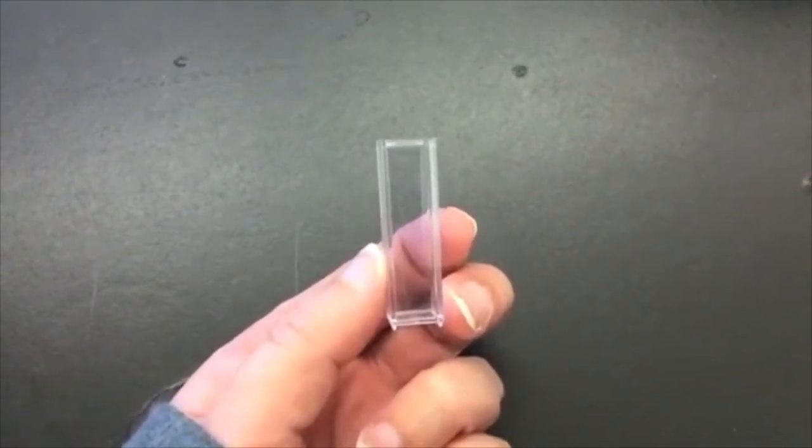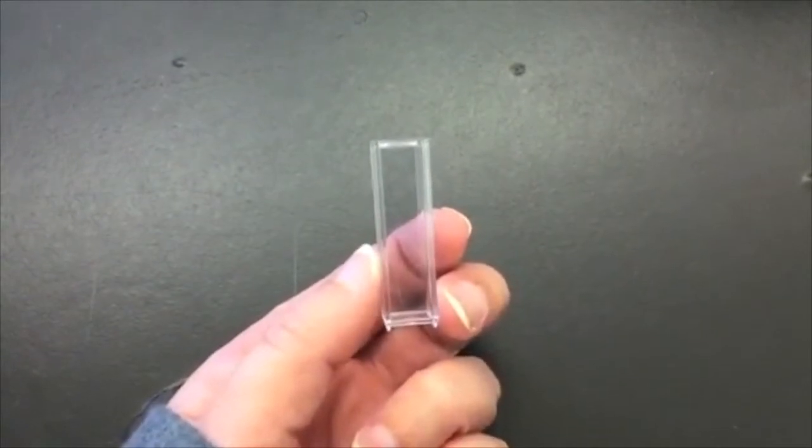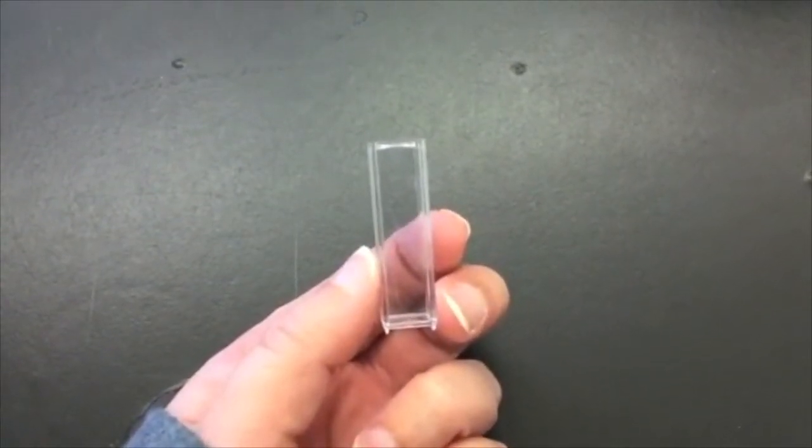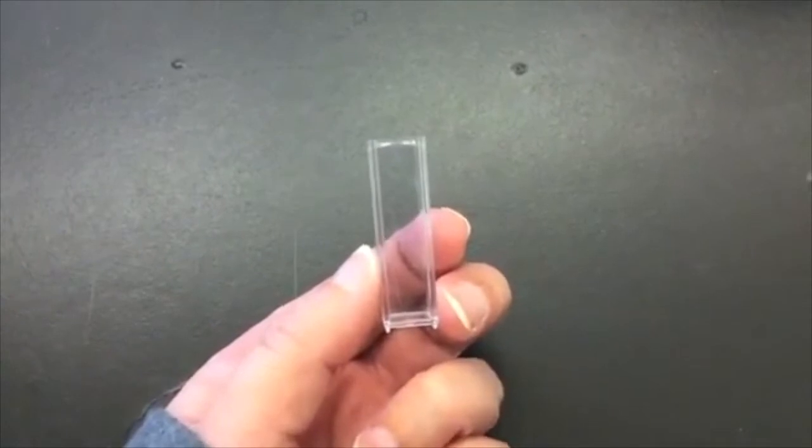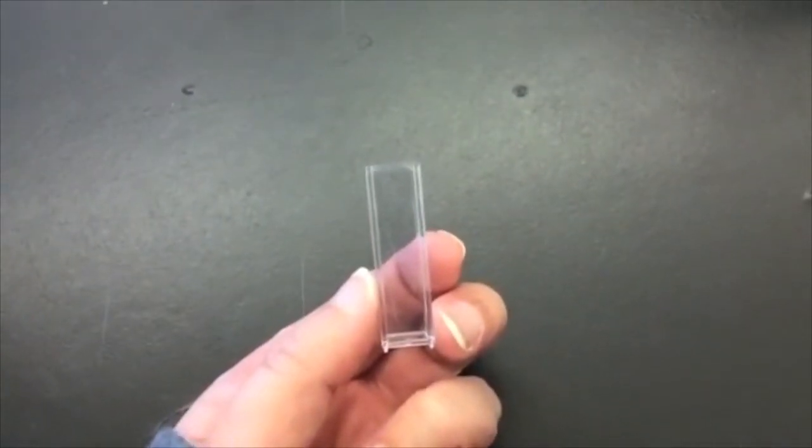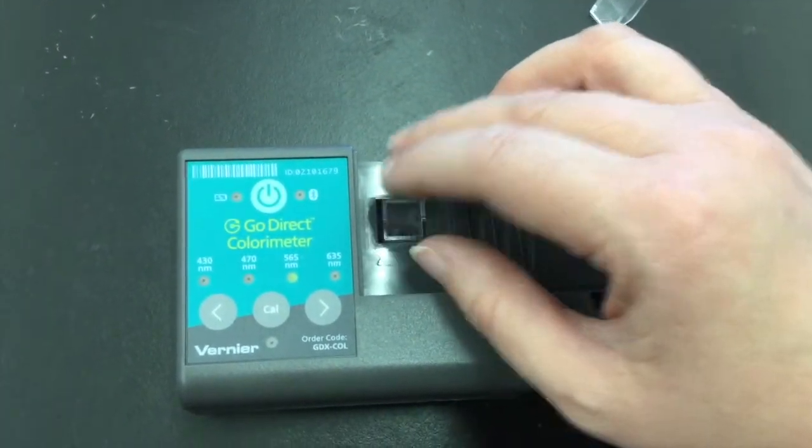Your lab manual refers to a reference mark. Sometimes you will see at the top of one of the edges a triangle. If not, just make sure that you face one of the clear sides towards the reference mark. We are going to put in distilled or deionized water for our calibration.